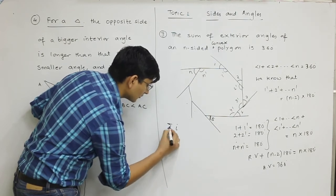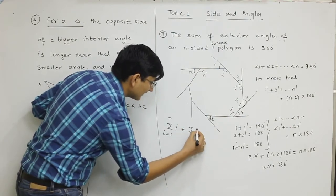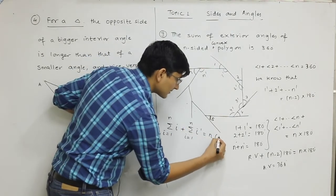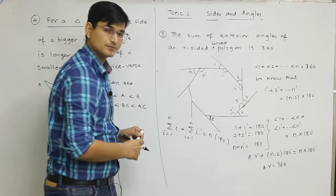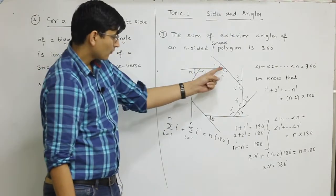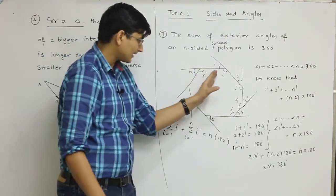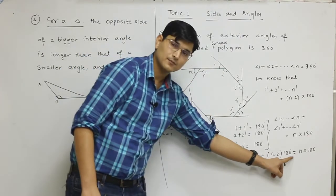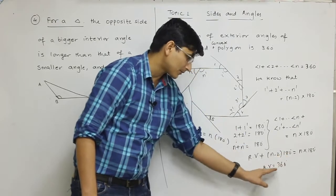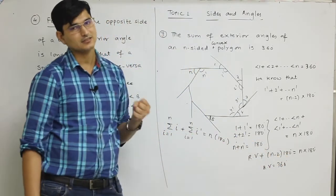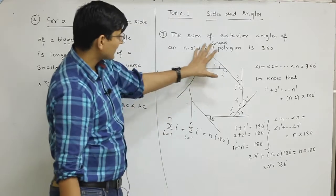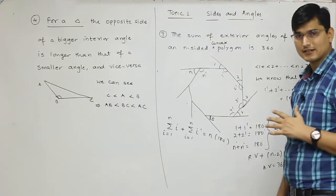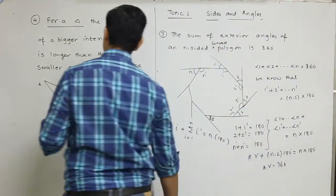It's very simple. I added all these equations. Adding them gives: sum of i (i=1 to n) plus sum of i' (i=1 to n) equals n×180, because we're adding 180 n times. And we saw that the sum of i' is (n-2)×180. Putting (n-2)×180 here, you get 2×180 which is 360. So the sum of exterior angles is also 360.